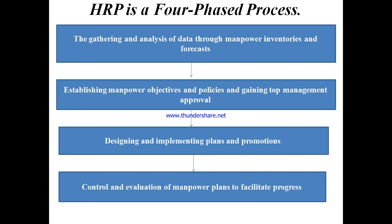In the control system, we take feedback and evaluate how effective our planning was. That is the last but not the least step of the human resource planning process — control and evaluation of manpower plans to facilitate progress.